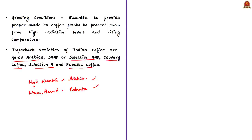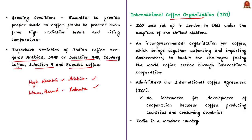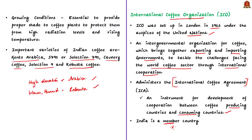The International Coffee Organization (ICO) was set up in London in 1963 under the auspices of the United Nations. It is an intergovernmental organization for coffee that brings together exporting and importing governments to tackle challenges the world coffee sector faces through international cooperation. The ICO administers the International Coffee Agreement, an important instrument for cooperation between coffee producing and consuming countries. India is both a major coffee producer and consumer and is a member of the ICO.